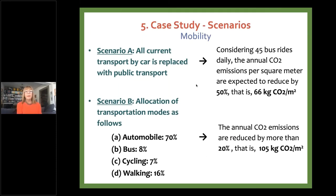For mobility, we developed two scenarios. A radical scenario replaced all transport with public transport by introducing bus routes, achieving a 50 percent reduction in CO2 emissions. A more realistic scenario reduced automobile use from 92 to 70 percent while increasing public bus, cycling, and walking networks, achieving a 20 percent CO2 reduction.